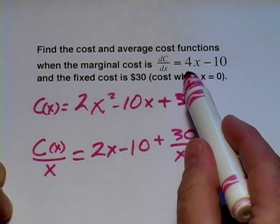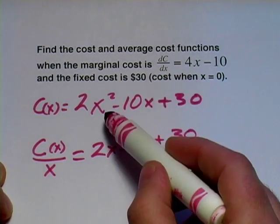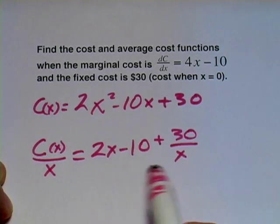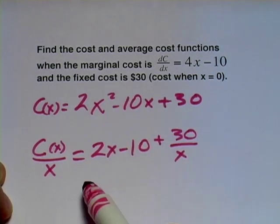So we found the antiderivative of the marginal cost function to get the cost function, and then just divided all the terms by x to get our average cost function.